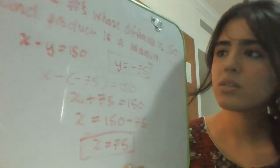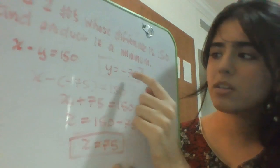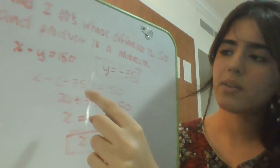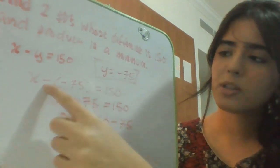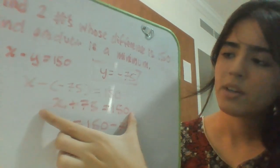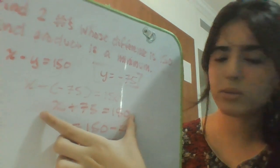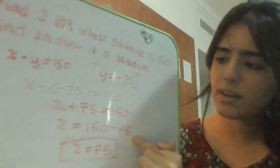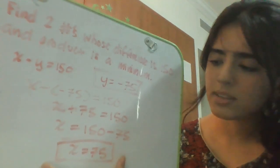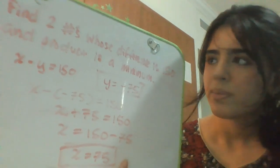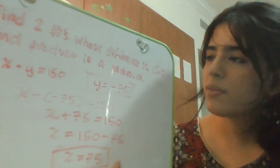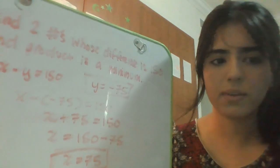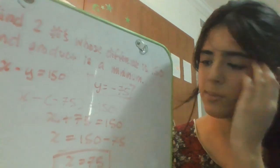Okay guys, so here I just plugged the y value into this equation, this one. And here it's x minus negative 75. You know that when negatives multiply, it'll result in a positive. So we have our equation x plus 75 equals 150. Now to find x, just move 75 to the other side and minus, and you get your x value as 75. So the two numbers whose difference is 150 and product is a minimum is negative 75 and positive 75. So you have both numbers, therefore the question is solved.